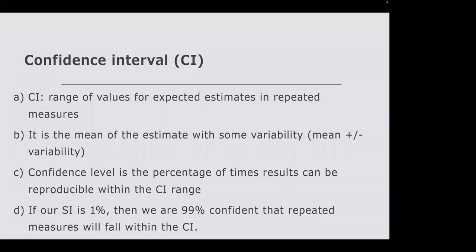Confidence intervals also tell you how precise your estimates are. The narrower the confidence interval range, the more precise your estimates are likely to be. For example, if the ages of children in grade 12 have a confidence interval of 14 to 18 around a mean of 16, that is quite close. But if the confidence interval is 9 to 34 around a mean of 16, the estimates are very spread out and you should look back into your sample.